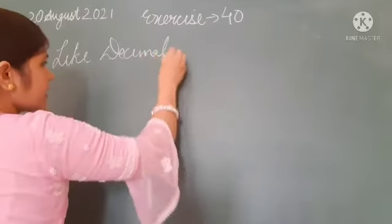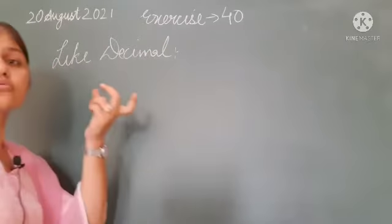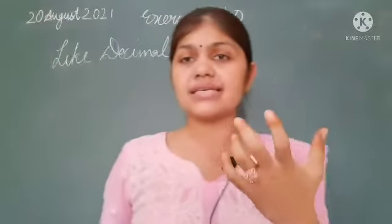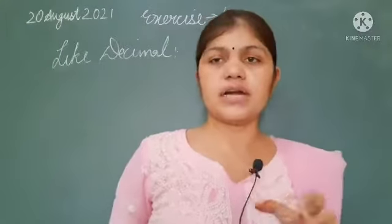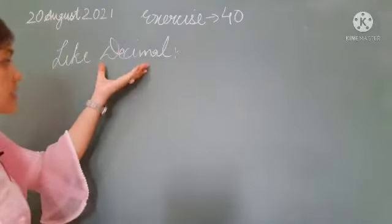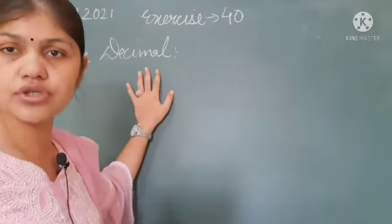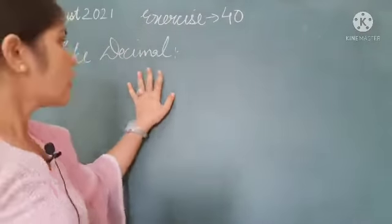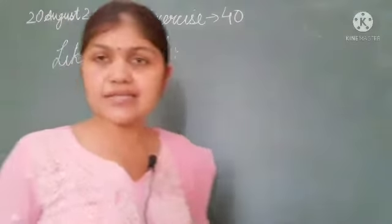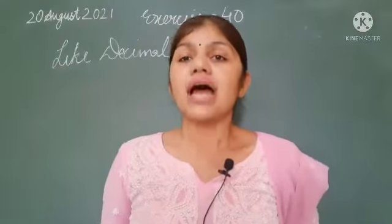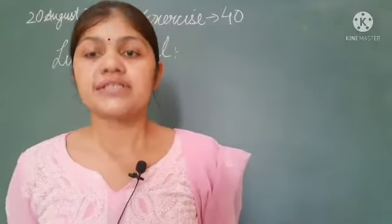'Like' means something similar, and 'unlike' means different. So what is like decimals? Obviously, decimals will be something similar. What are like decimal places? Like means the number of decimal places is the same.